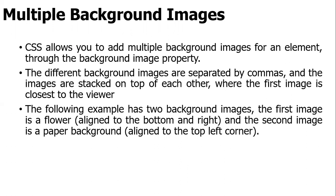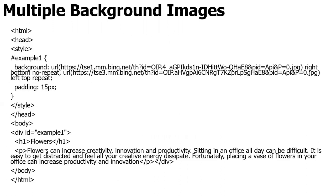The following example has two background images — the first image is a flower and the second is a background aligned to the top left corner. In this example, first open the HTML tag, then head tag, then style tag. Under the ID 'example one', set background URL with the image path, right bottom, no-repeat. Then another image is left top, repeat. Padding of 15 pixels is given, then the style tag and head tag should be closed.